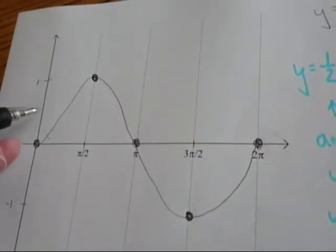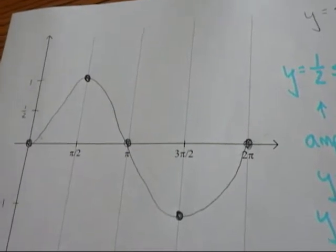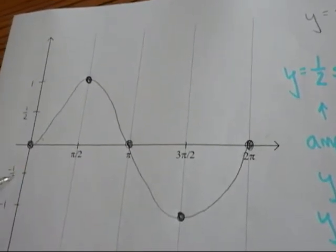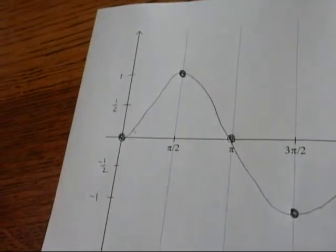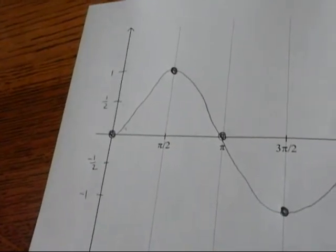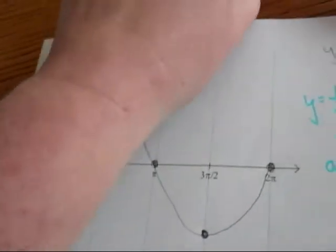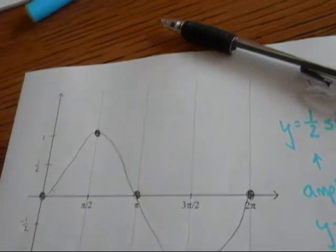Let's begin by putting in our one half and negative one half on our y axis. Then, let's look at changing the length of the period.